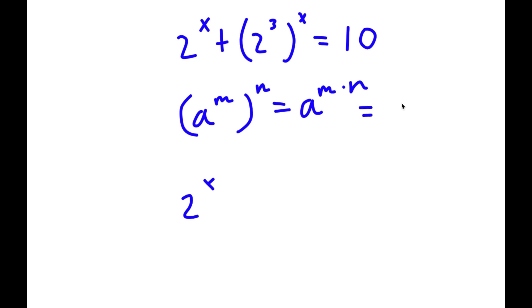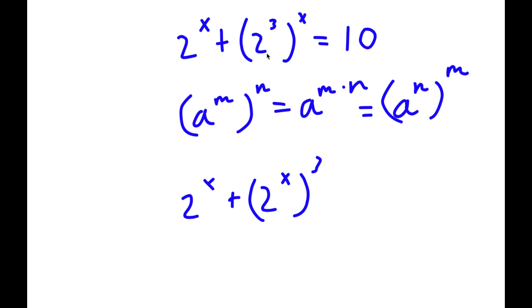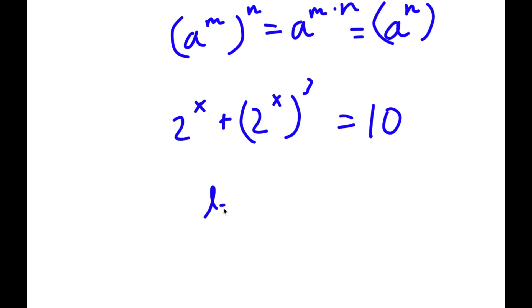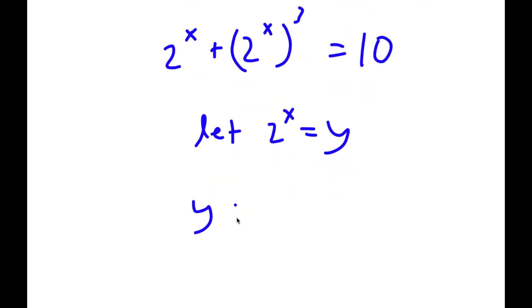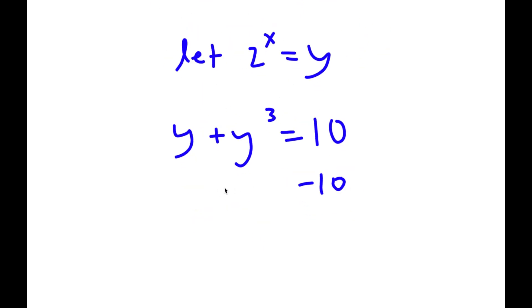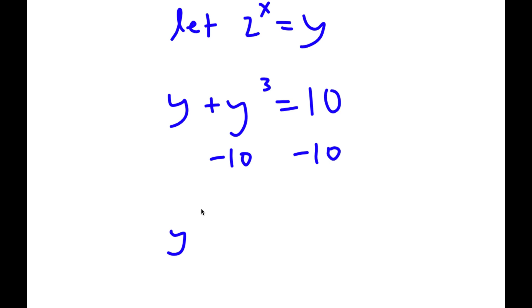This is also equal to 2 to the power of x to the power of 3 — I simply switched the exponents. Now letting 2 to the power of x equal y, I have y plus y to the power of 3 equals 10. Subtracting 10 from both sides gives y cubed plus y minus 10 equals 0.